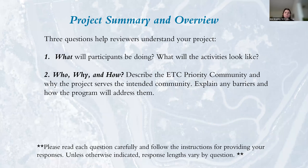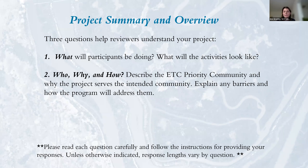The next section is the project summary overview, with two questions for reviewers to understand your project. Question one asks what the project is — what participants will be doing and what activities and trips will look like. For example: low-income youth and their families going on trips to the beach for surfing lessons and picnicking. Question two is who, why, and how — describe the ETC priority community served, barriers, and how the program addresses them. For example, providing surfing lessons and lunches for low-income youth reduces economic barriers.